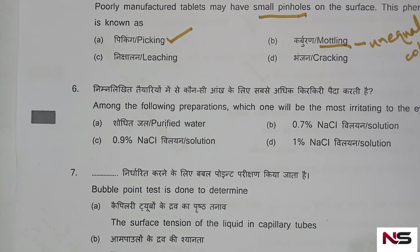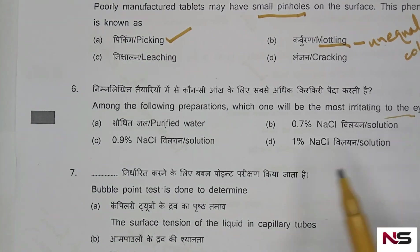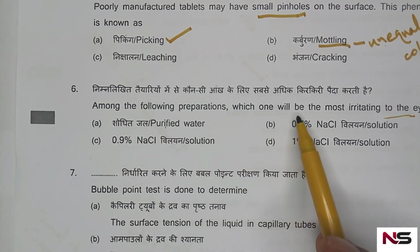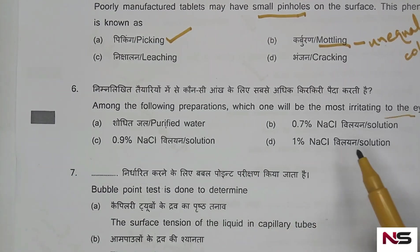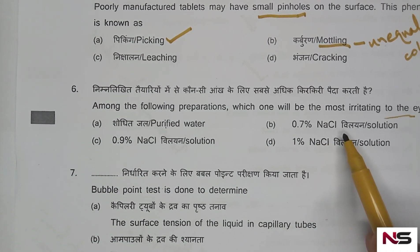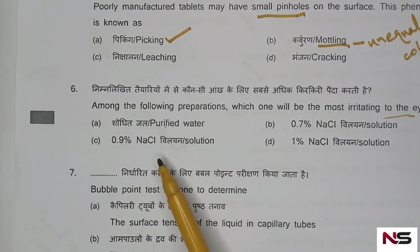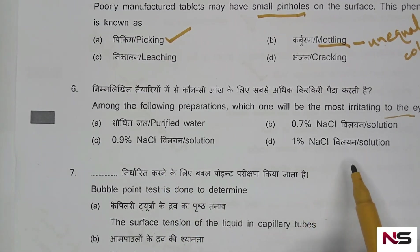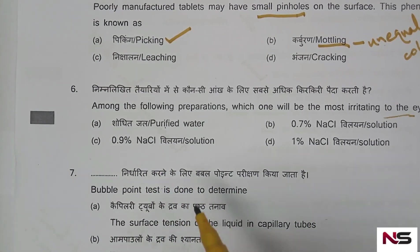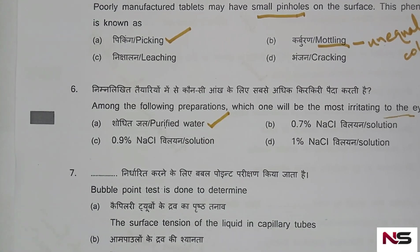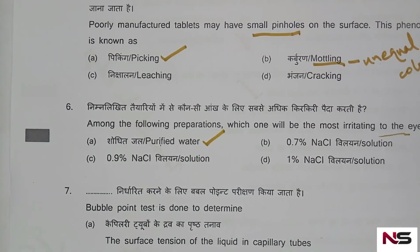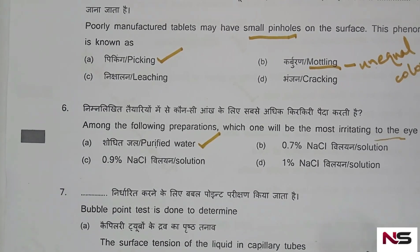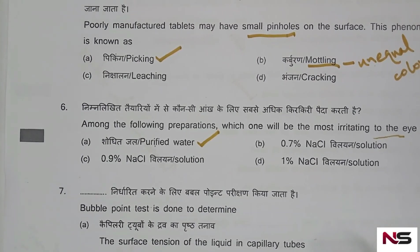Question 6: Among the following preparations, which one will be most irritating to the eye? Options: A) purified water, B) 0.7% sodium chloride solution, C) 0.9% sodium chloride solution, D) 1% sodium chloride solution. The correct answer is option A — purified water will be the most irritating to the eye.